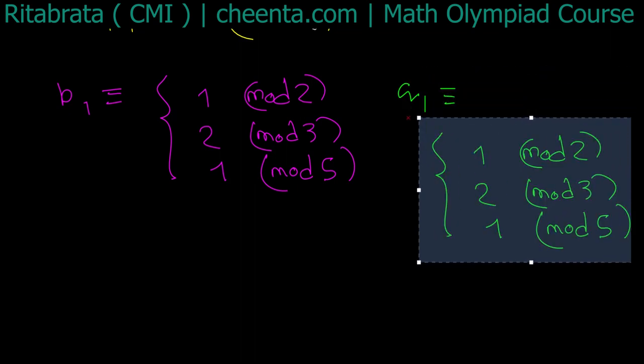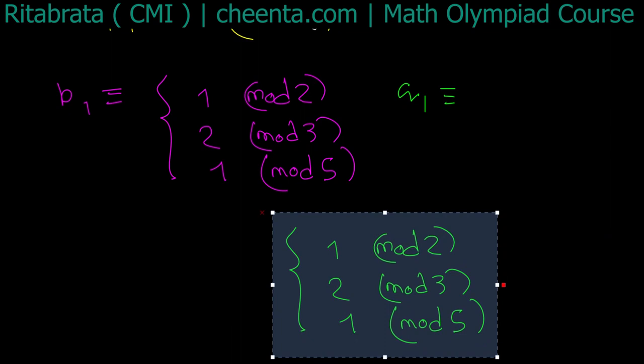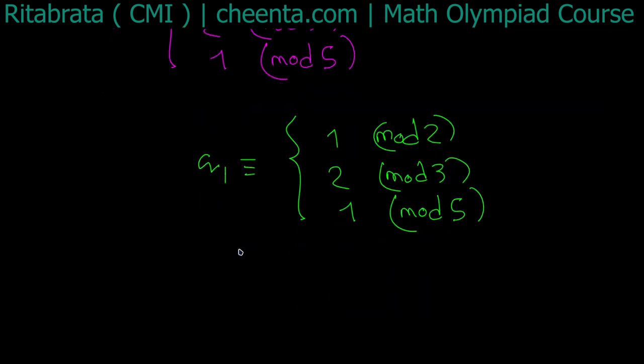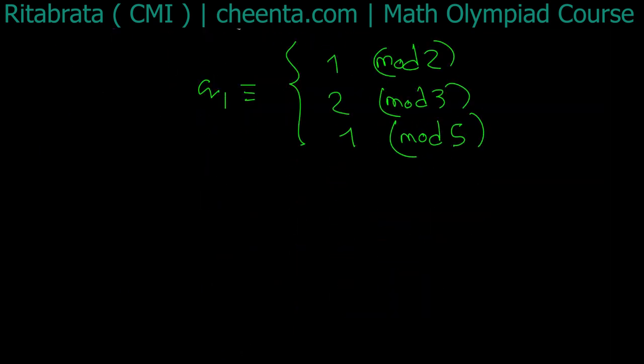This works. This works. If you write it here, this also works. So in either cases, p1 - q1, what can we say about it? In either cases, 2 divides p1 - q1, 3 divides p1 - q1, and 5 divides p1 - q1.